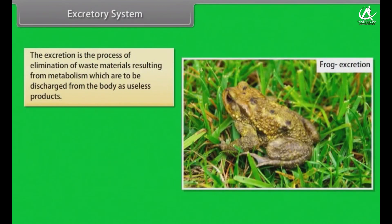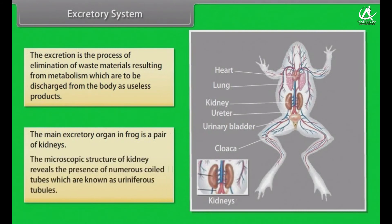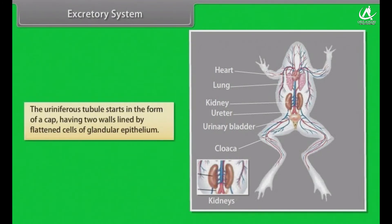Excretory system. The excretion is the process of elimination of waste materials resulting from metabolism. The main excretory organ in frog is a pair of kidneys. The microscopic structure of the kidney reveals the presence of numerous coiled tubes known as uriniferous tubules. The uriniferous tubules start in the form of a cup having two walls lined by flattened cells of granular epithelium.